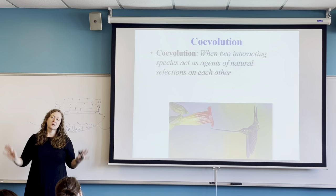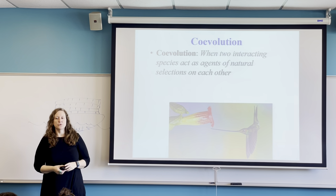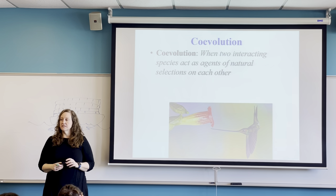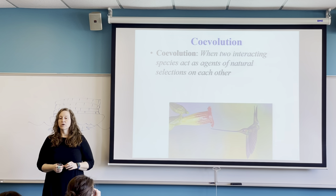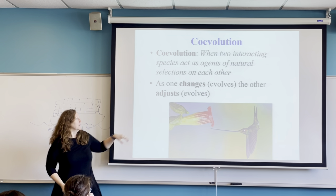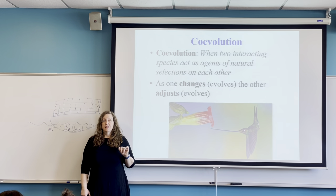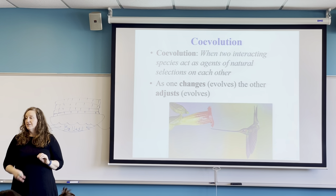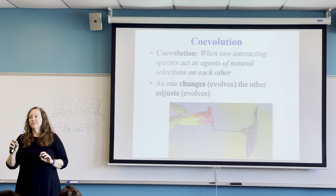What happens naturally with species is a process called co-evolution. Co-evolution means that one species acts as an agent of natural selection on another. As one species changes or evolves, the traits that are favored must also change in the interacting population — therefore they must evolve too.